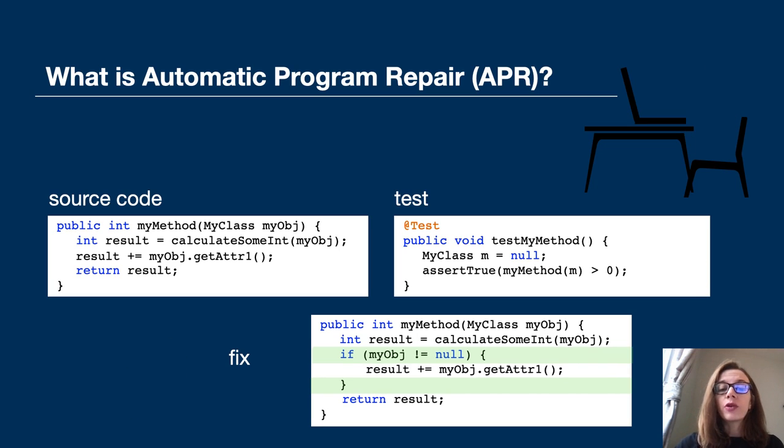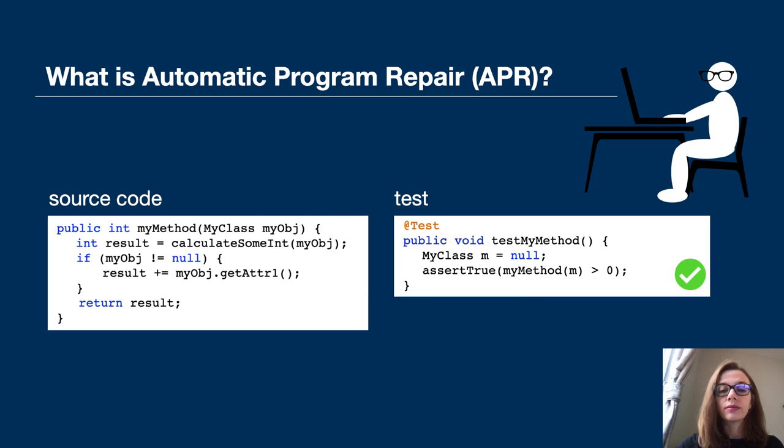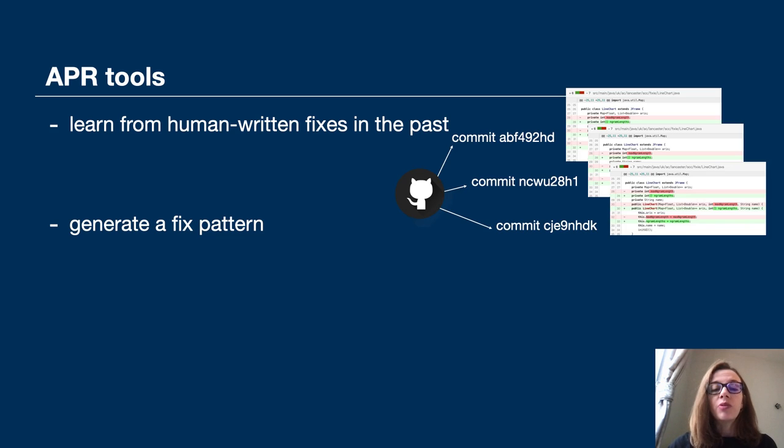Once you're back from your lunch break, you have a fix waiting for you to accept it and apply it to your code. But how did the APR tool know how to fix your code? Many APR tools learn from the fixes written and committed to repositories in the past.